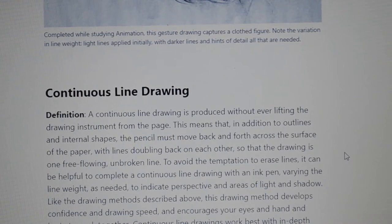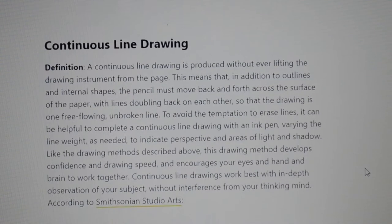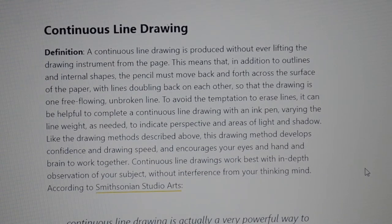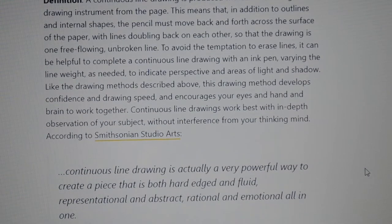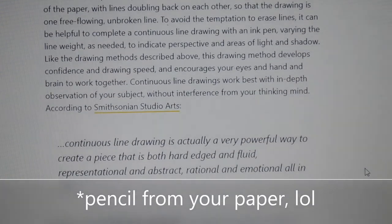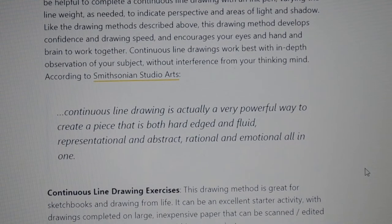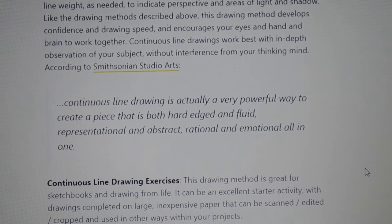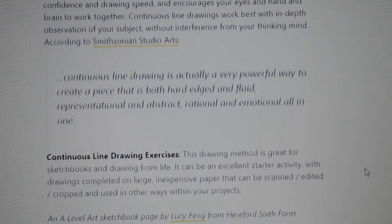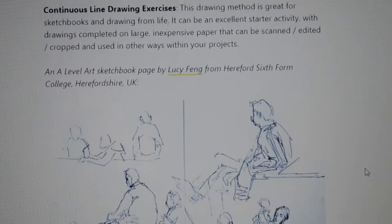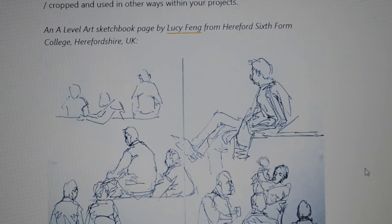There are also continuous line drawings — we'll actually be doing that for our final project, combining the gestural technique and the continuous line. A continuous line just means that you never pick up your pencil from the paper. The unbroken line is the key to this. This helps avoid the temptation of erasing or being indecisive as you draw. Here are some examples of continuous line drawings.